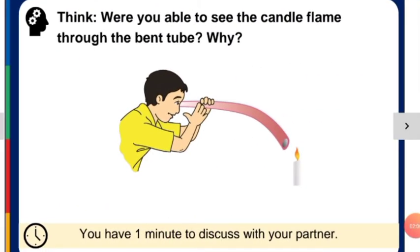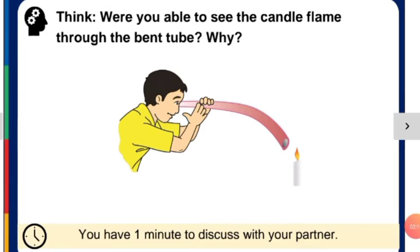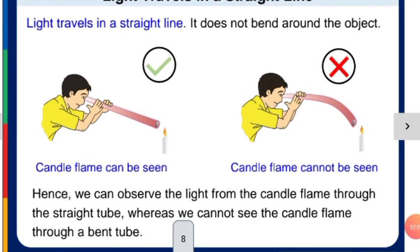Now tell me, in the second process, have you seen the light clearly? Which process—first one or second one—allows you to see the light very clearly? I hope you have got your answer.